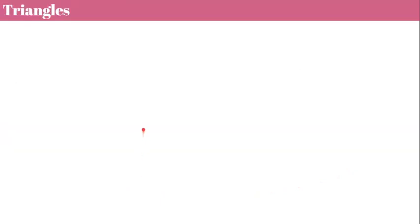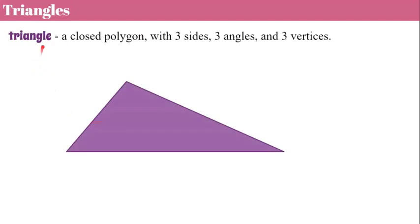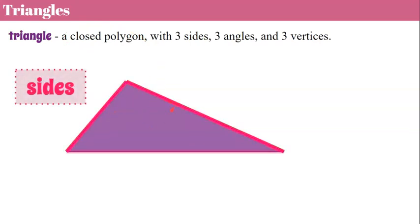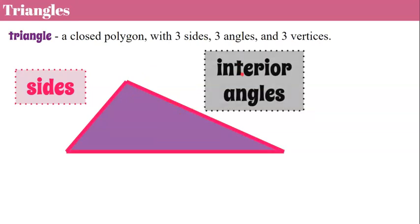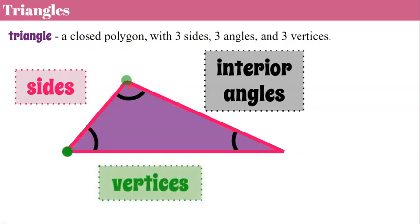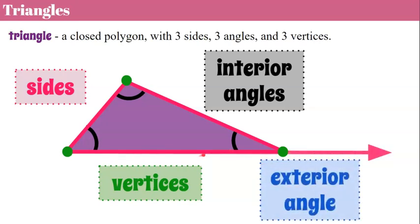Let's begin by reviewing triangles in general. A triangle by definition is a closed polygon, meaning all sides are connected, with three sides and three angles. We're going to talk about our interior angles — one, two, three — which are formed by our sides being connected because it's a closed polygon, and then three vertices. Our vertices are the points where our sides connect that form our interior angles. Now we're going to introduce an exterior angle, which means I've extended a side and it's formed this exterior angle. We'll learn more about that later in the video.